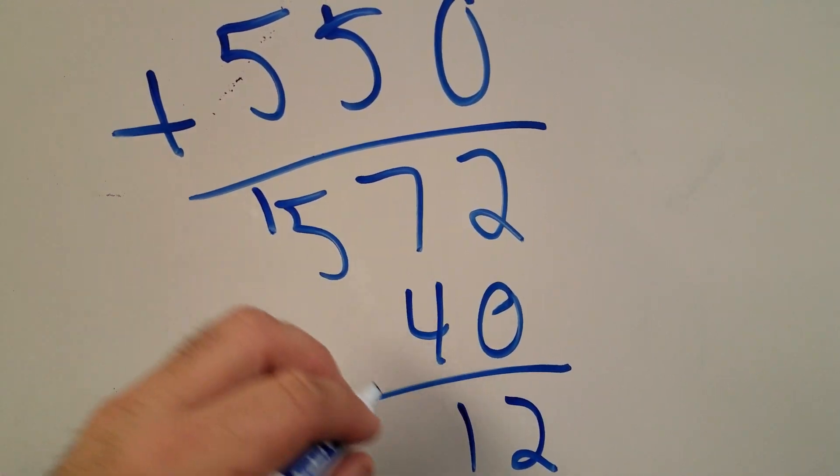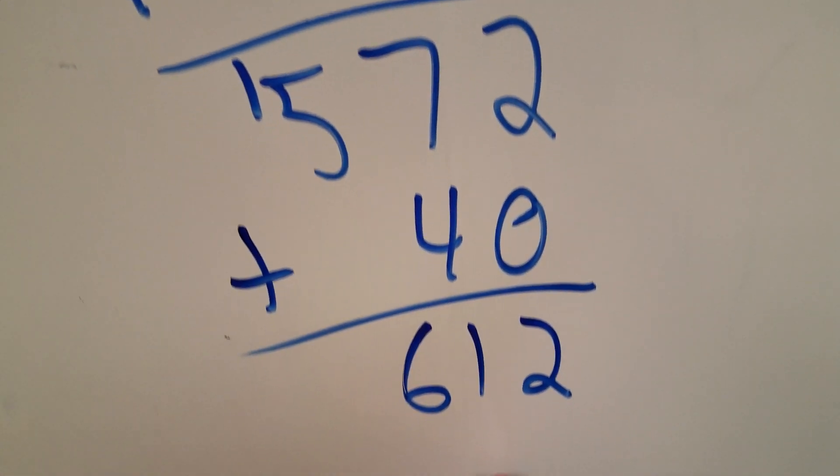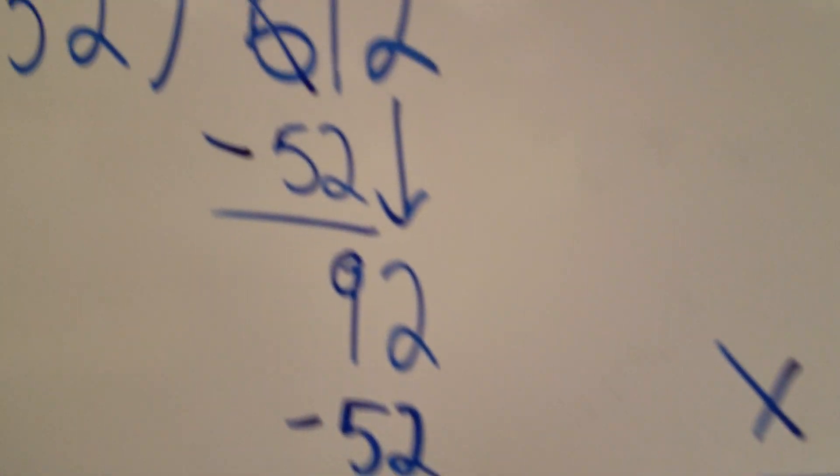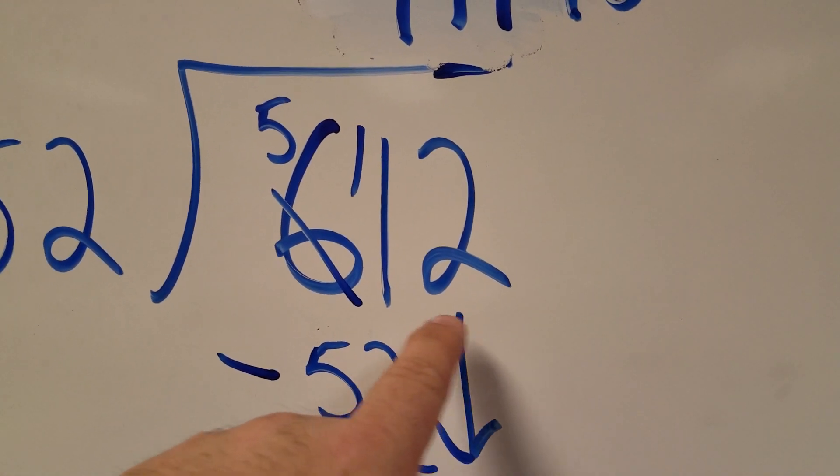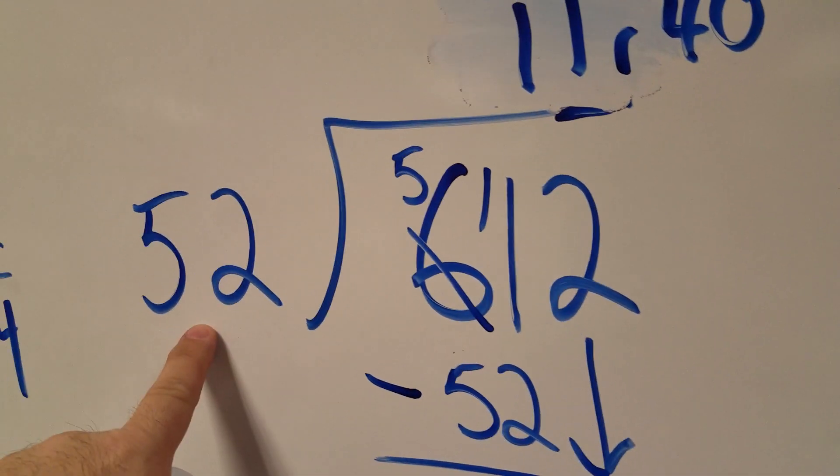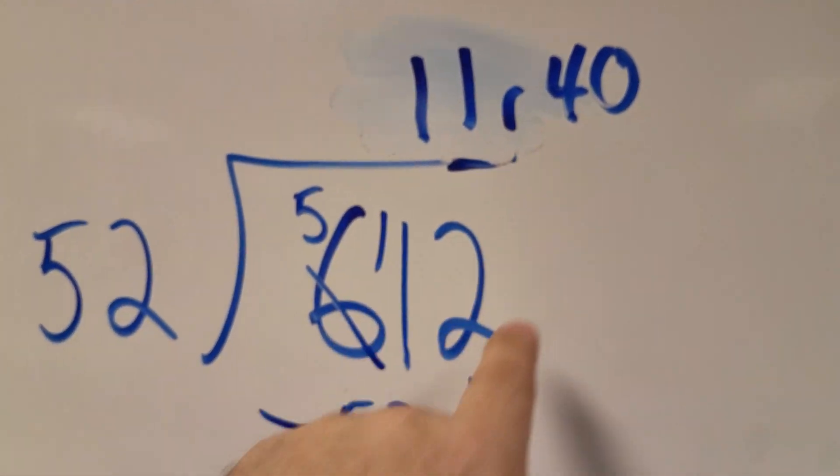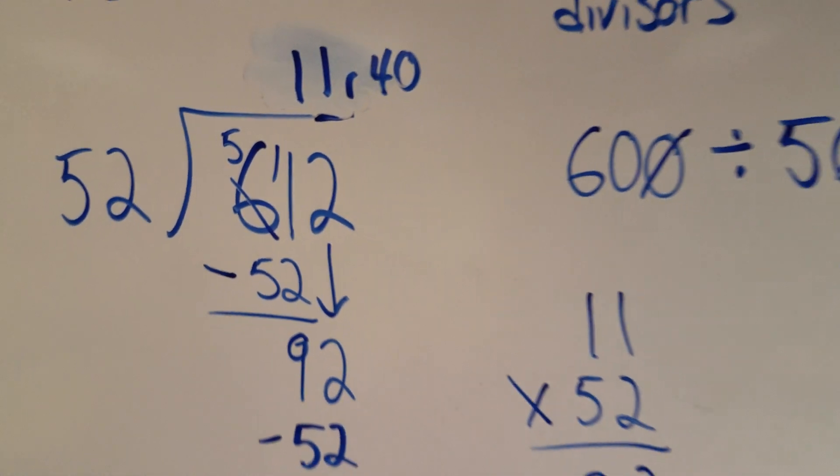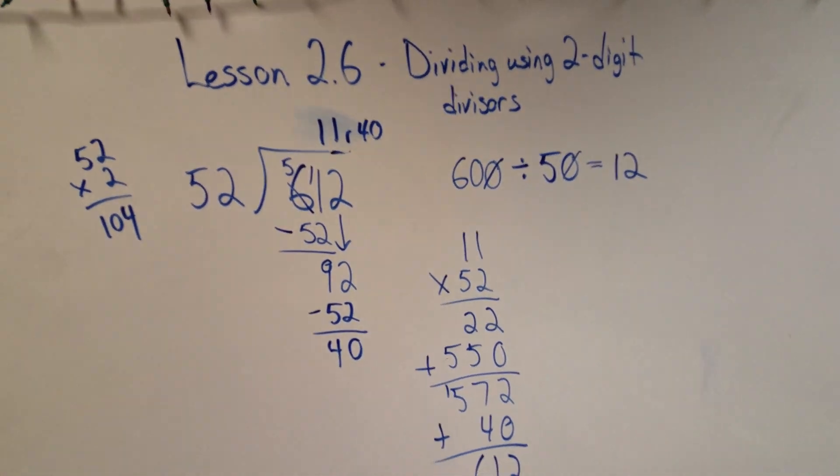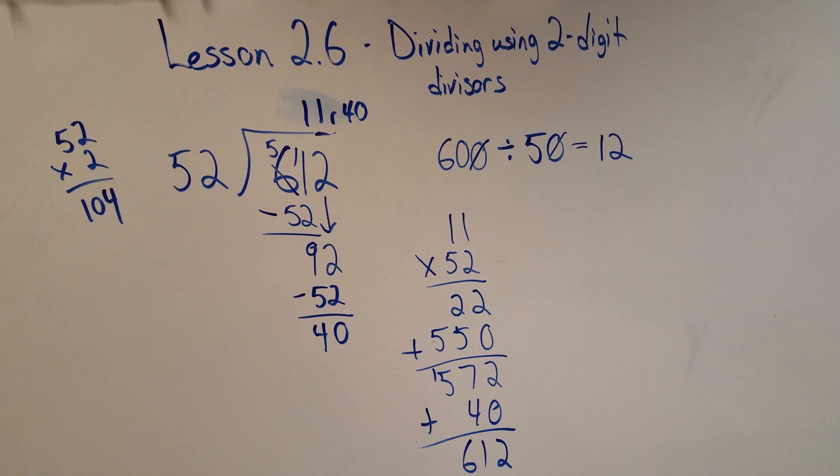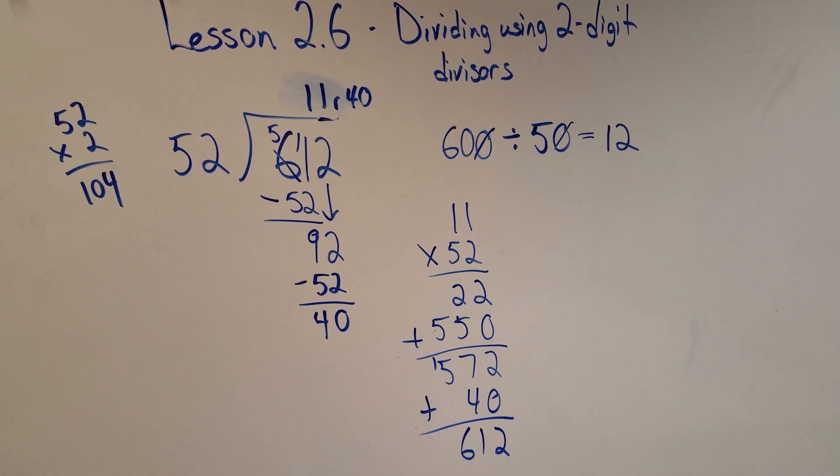2 plus 0 is 2, 7 plus 4 is 11, 5 plus 1 is 6. 612 is my answer, and hey, what do you know, that is my original problem. 612 divided by 52, or 52 times 11 plus 40, gives me 612. So there you have it. Pretty easy, straightforward lesson. If you have any questions, see me tomorrow. Take care, bye bye.